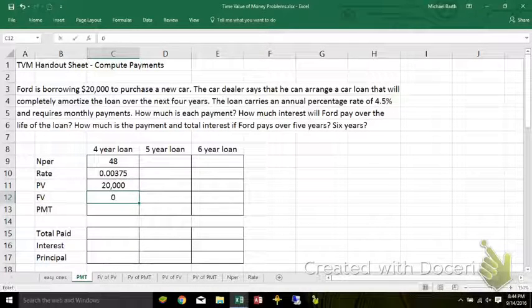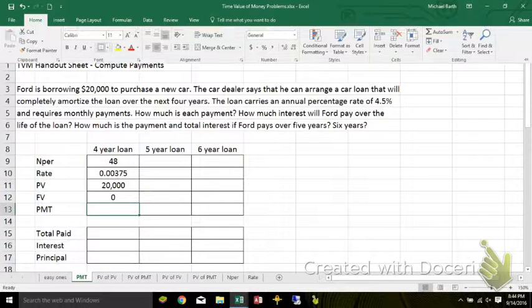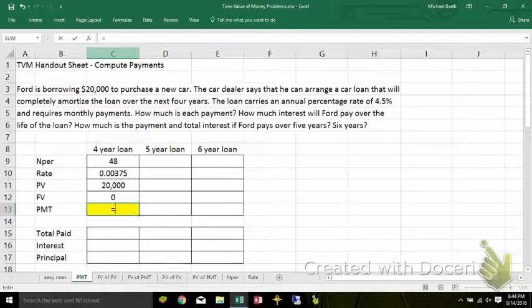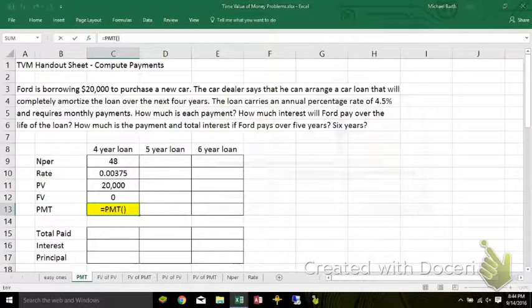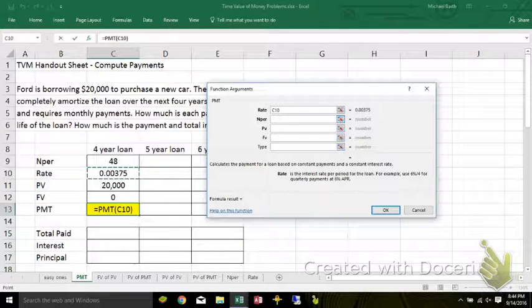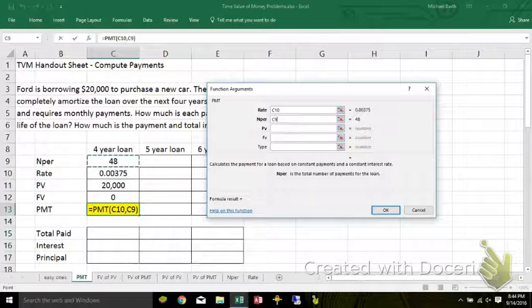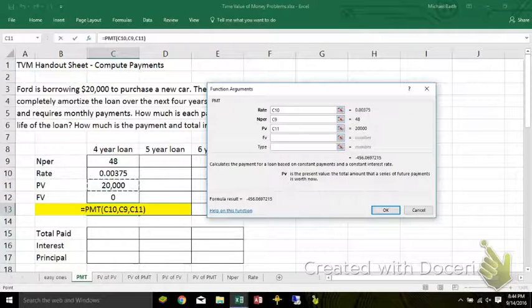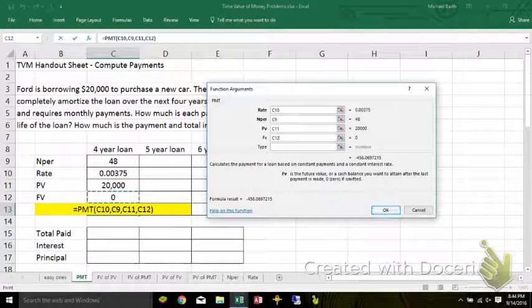Completely amortized loan means you owe zero at the end, and we're solving for the payment. So equals PMT, open parenthesis, click on there, it opens up a dialog box. I'm using cell references for a reason, because I can just copy stuff over to the next several cells once I get one of these set up. Present value, future value, hit the return.